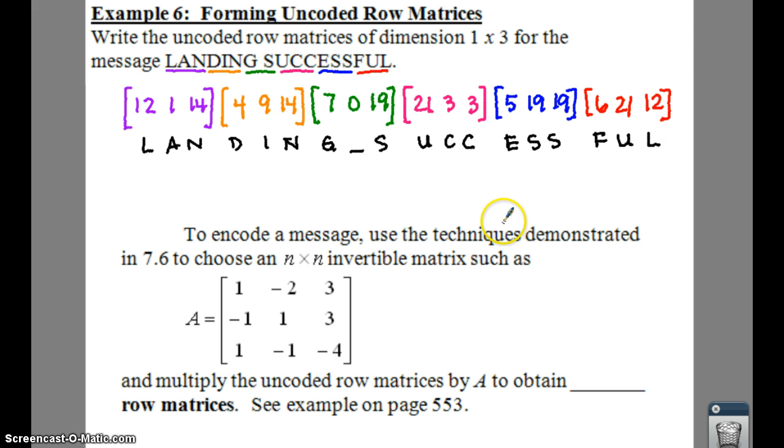And this is nice and handy, because whenever we want to encode this message, then what we're going to do is use an invertible matrix, a 3 by 3, and help us find our coded row matrices. This will help us on our next example.